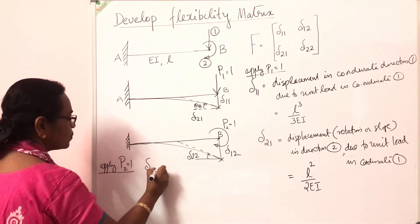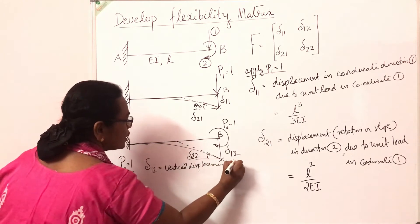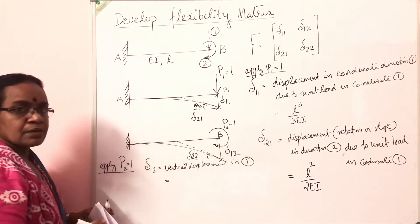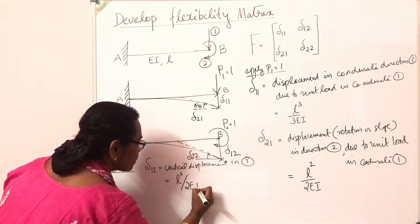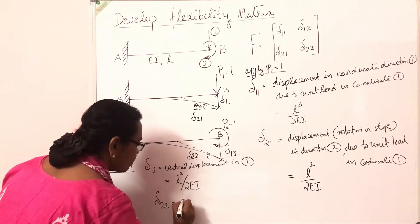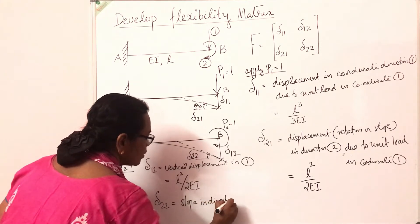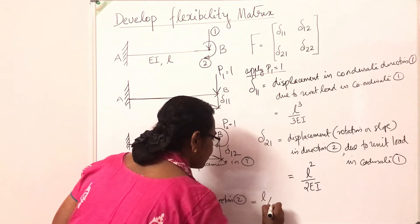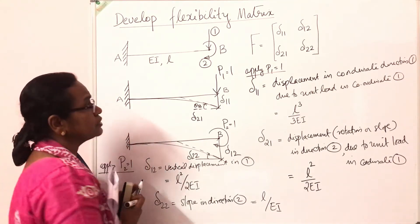Applying P2 = 1: δ12 is the vertical displacement in direction 1 due to unit load in direction 2. When we give moment M, the vertical displacement is ML²/2EI; since M = 1, δ12 = L²/2EI. δ22 is the slope or rotation in direction 2 due to unit load at coordinate 2. When we give a unit moment, the value of slope is ML/EI; since M = 1, δ22 = L/EI. Now all these coefficients are arranged in matrix form.